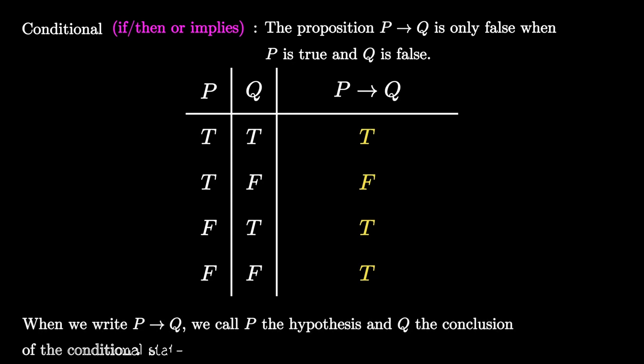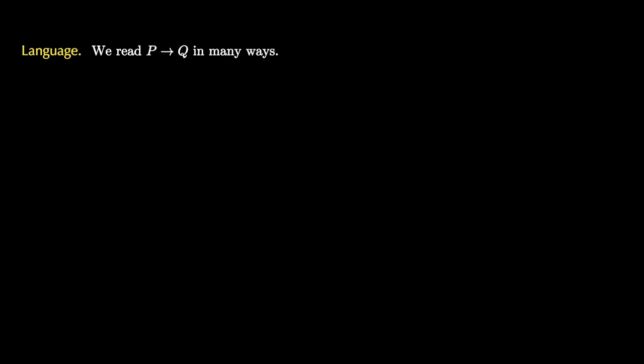When we write p implies q, we call p the hypothesis and q the conclusion of the conditional statement. There are many different ways to read the conditional connective. We can read it as 'if p, then q', or as 'p only if q'. We can say that p is a sufficient condition for q, or that q is a necessary condition for p, meaning q must happen once p happens. And finally, we can simply say p implies q — as soon as we know p, we must know q.